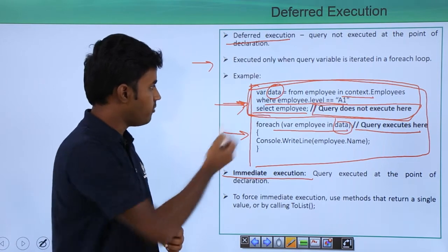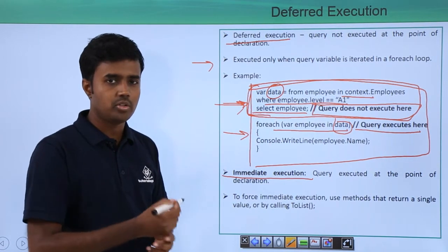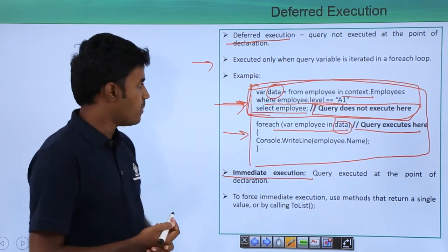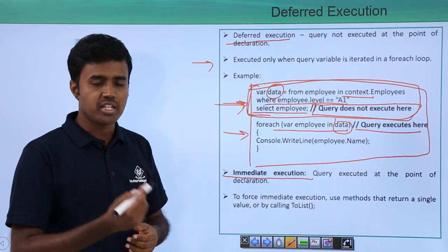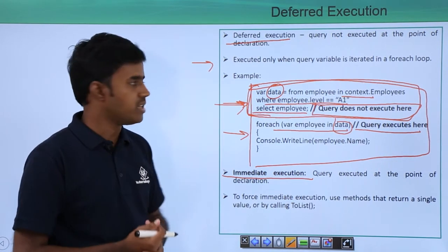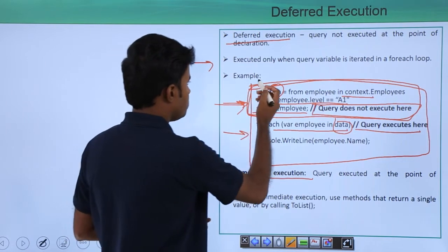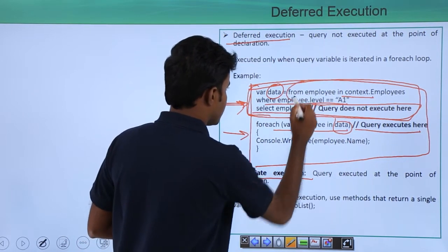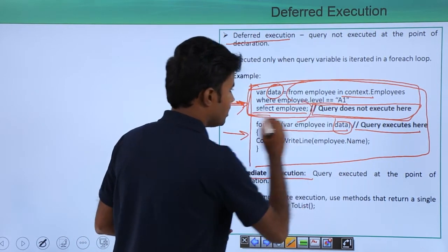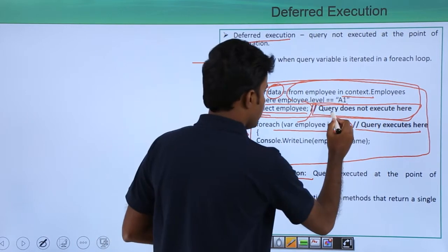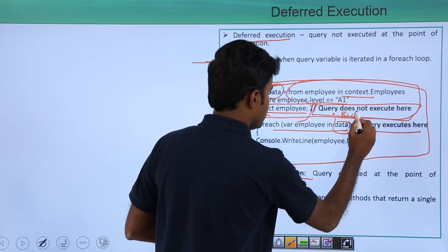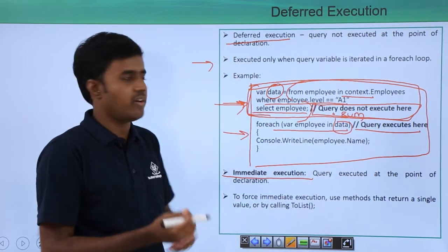You can force the LINQ query to immediately execute by using any function that returns a single value. For example, you can put this entire statement within a bracket and say dot sum. If you are retrieving a single value, for example salary, you can say dot average.